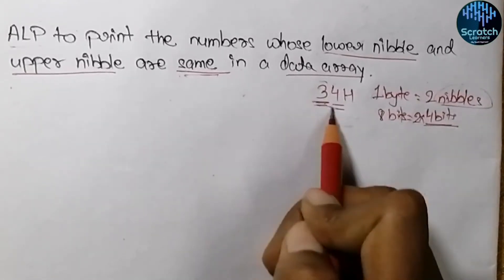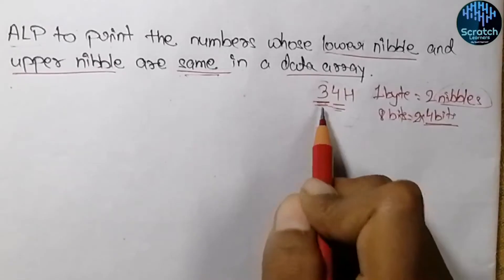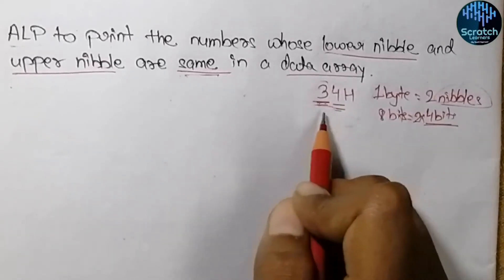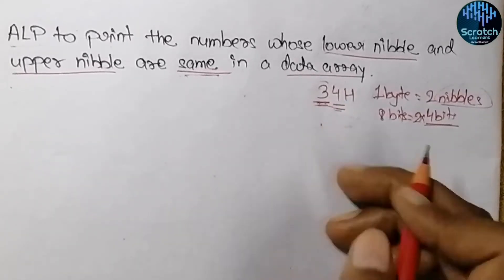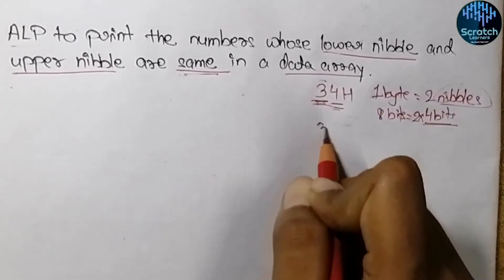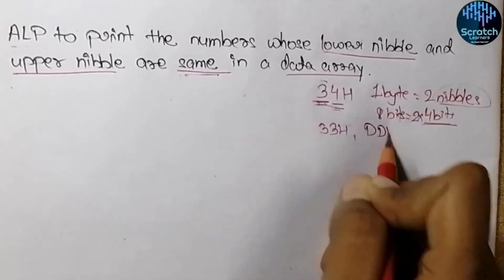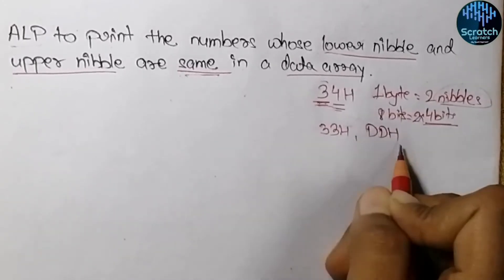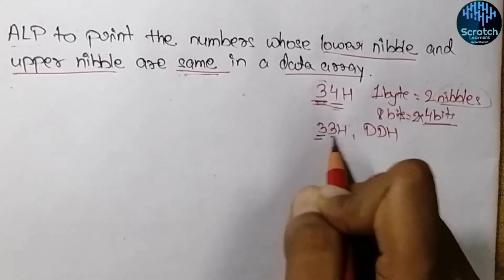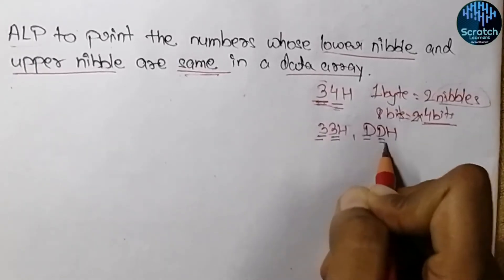We need to find all numbers whose two digits are same. Here, three and four are not equal so this is not our answer. But numbers like 33 hex or DD hex have the same lower nibble and upper nibble.